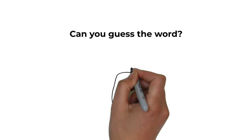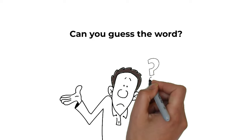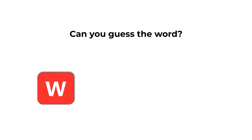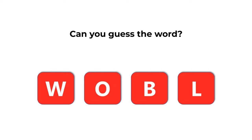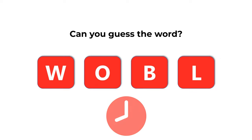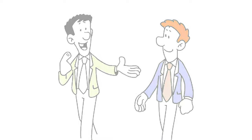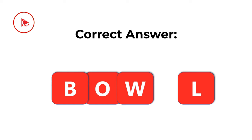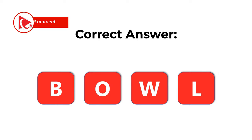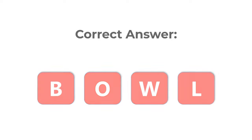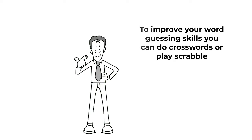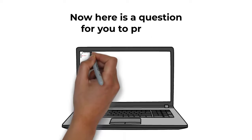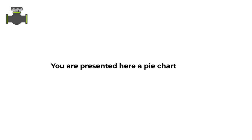Here's a cool question frequently seen on the test. You're presented with four letters — W, O, B, and L — and need to guess the word using all of them. Give yourself 10 to 15 seconds. The correct answer is BOWL, spelled B-O-W-L.